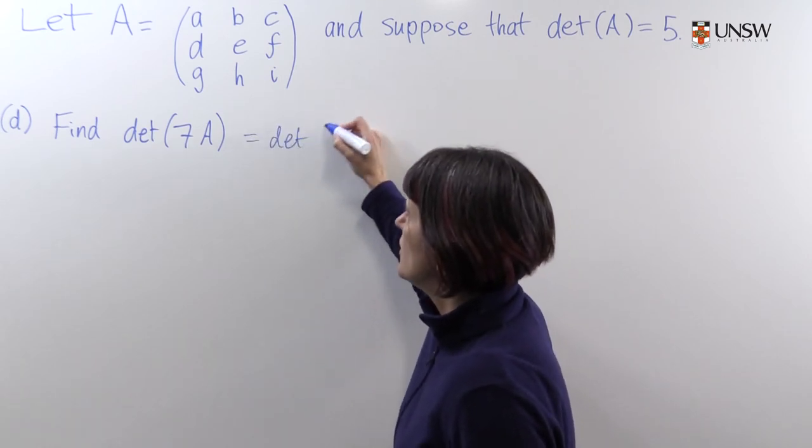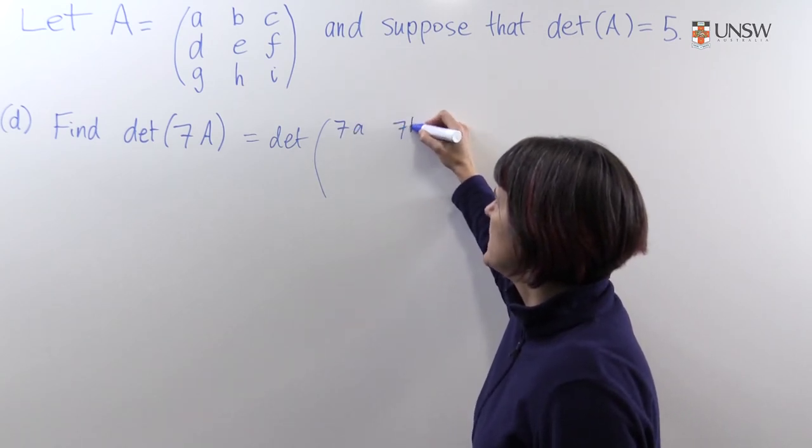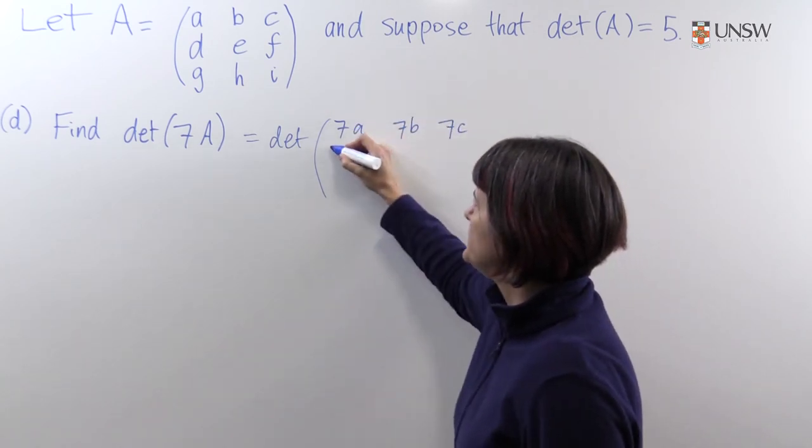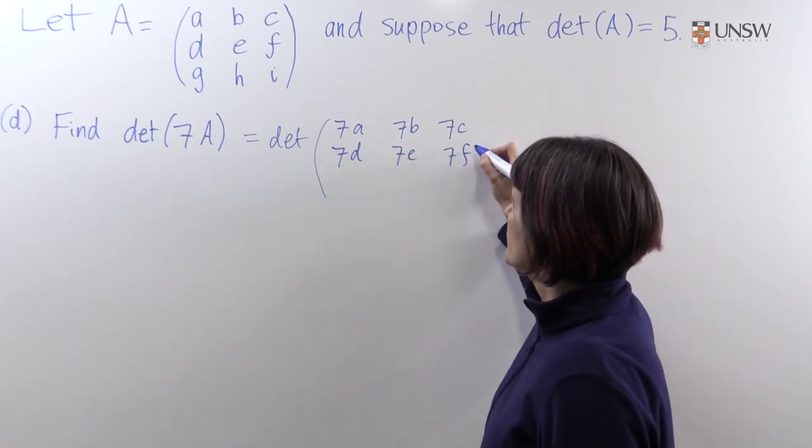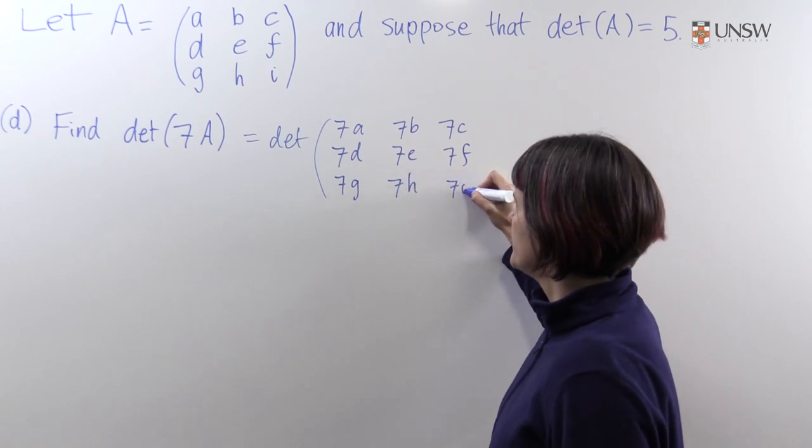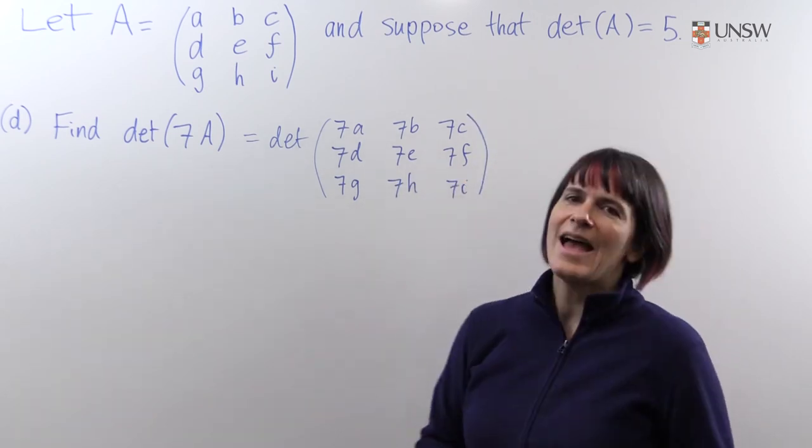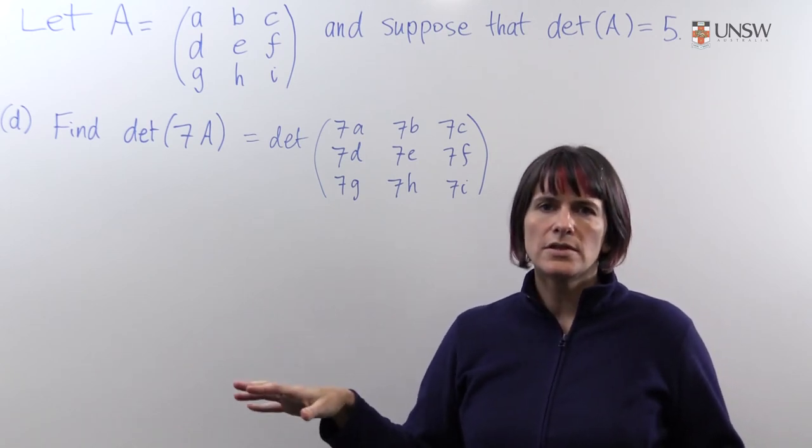Well, this is the determinant of, let's write the matrix out in full, seven A, seven B, seven C, seven D, seven E, seven F, seven G, seven H, seven I.